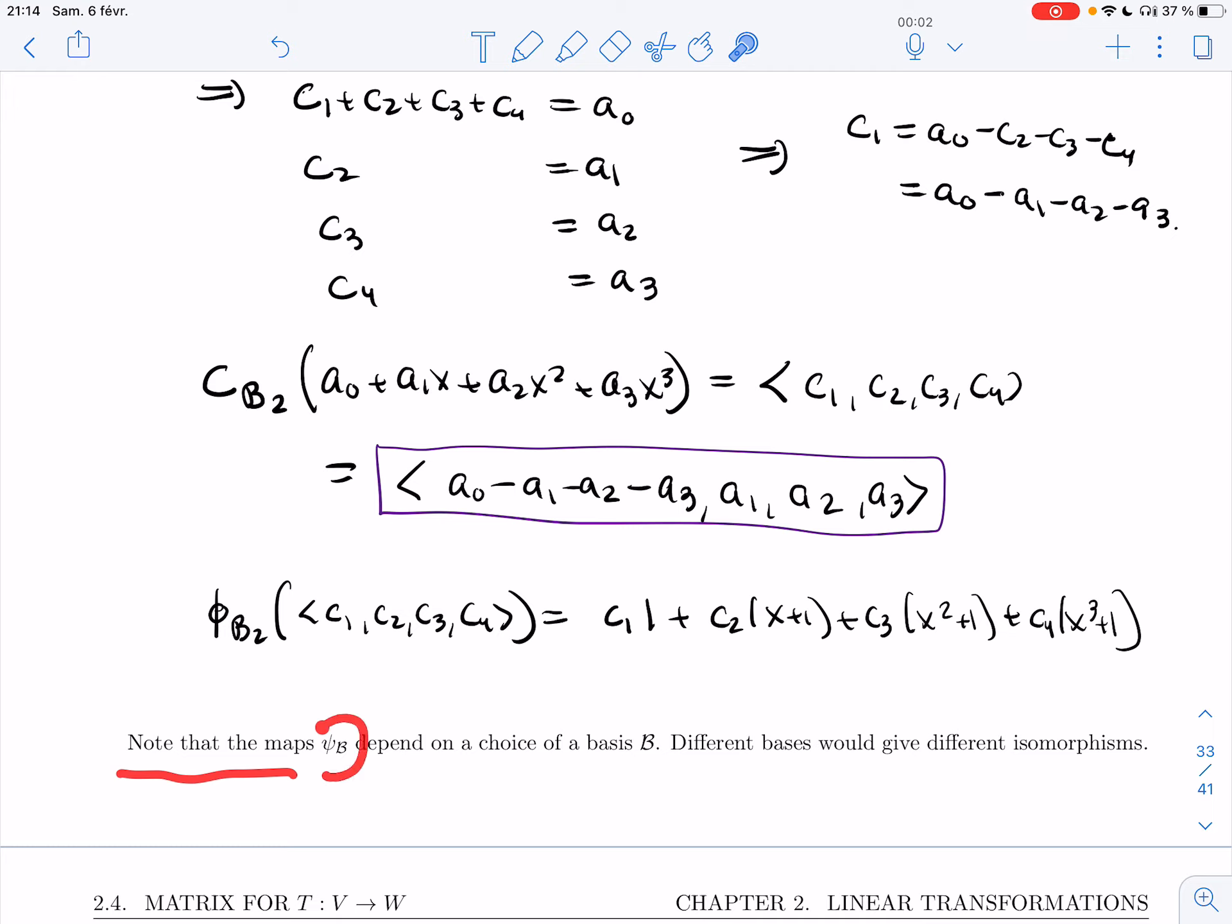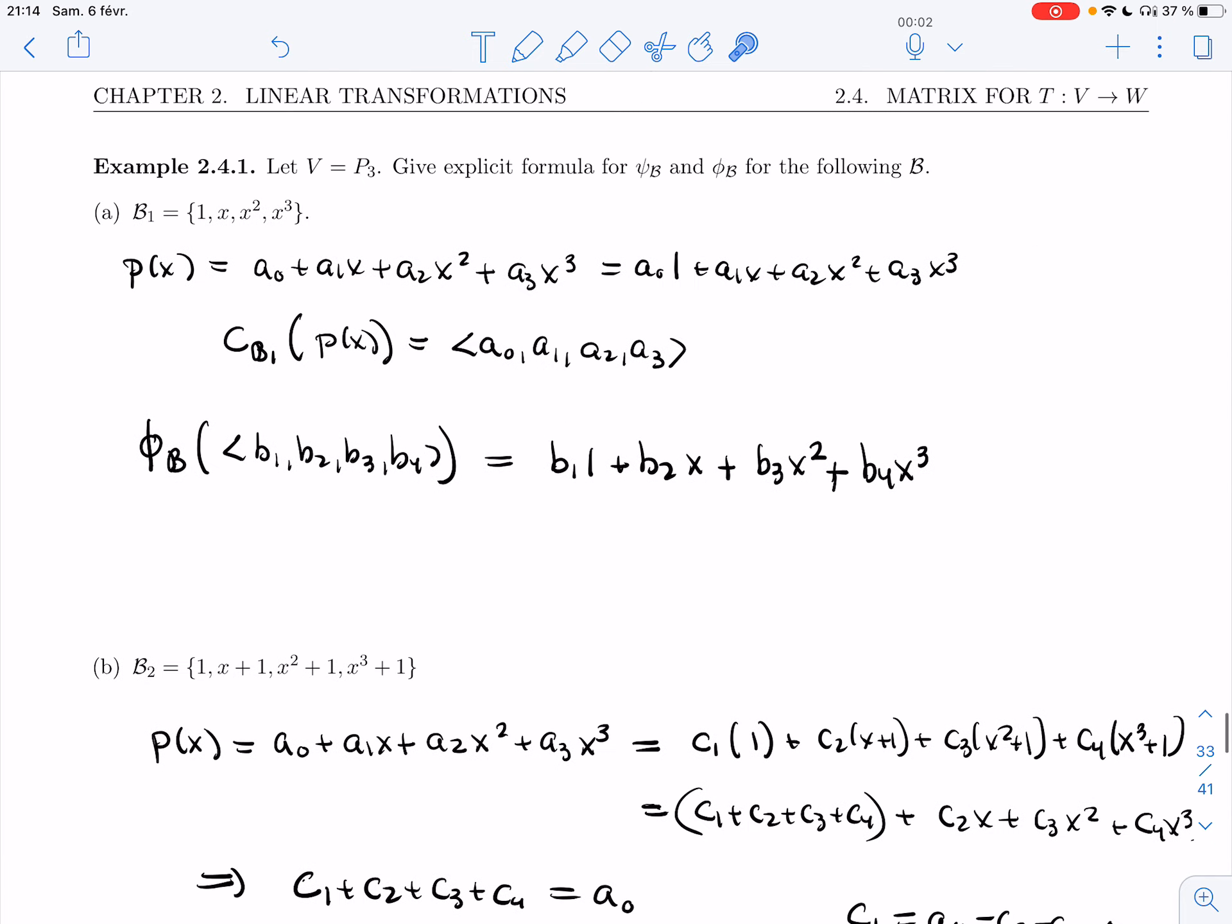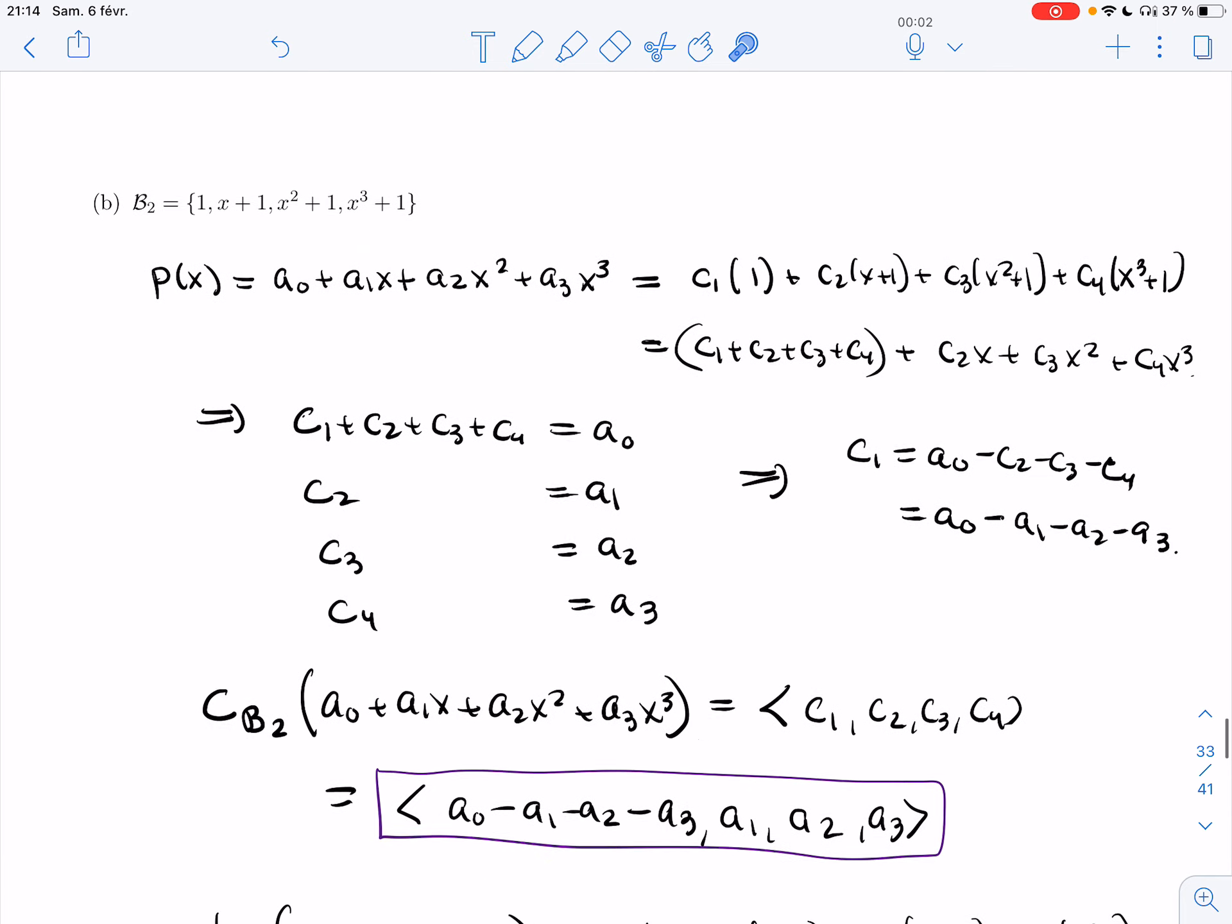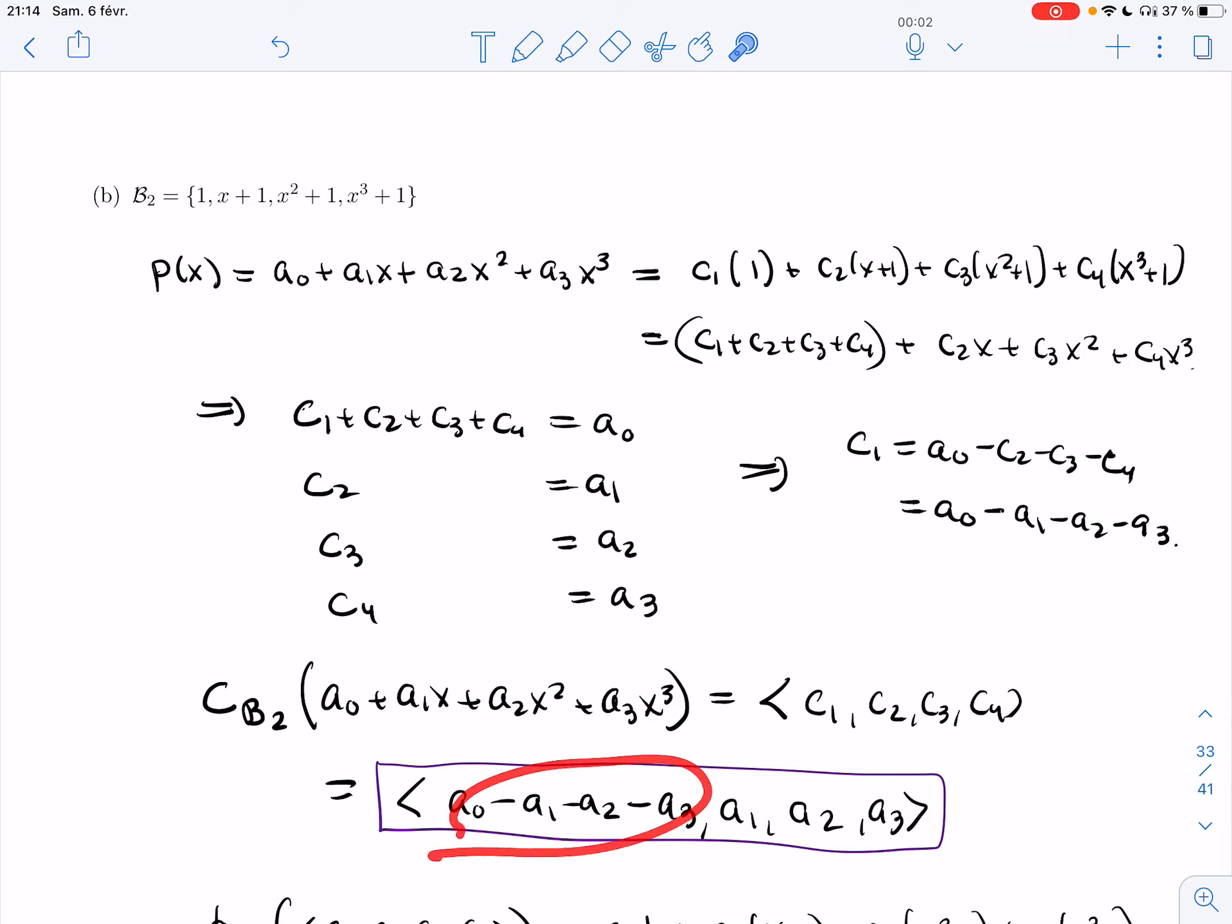Note that the maps ψ_B depend on a choice of basis. Different bases would give you different isomorphisms, and you could see it here. But this one was more straightforward. This one was a bit more involved. The first component was a bit more complicated. But really, this basis is not complicated. If I give you a complicated basis, it would be even more complicated.